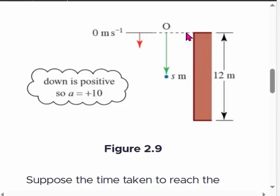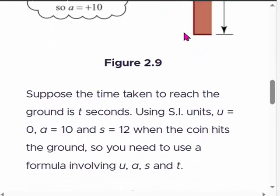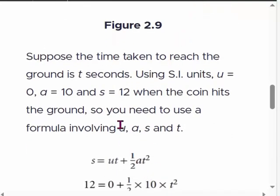Therefore, if we use an equation with u, a, s, and t - since we don't know the values of final velocity v - we need to choose the appropriate formula.